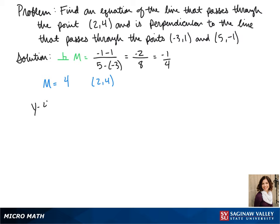We take our slope of 4 and our point (2, 4) and plug those into the point-slope formula. So we have y minus 4 equals 4 times (x minus 2).